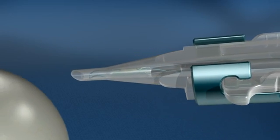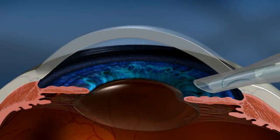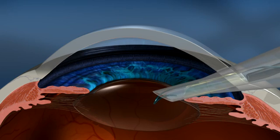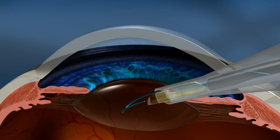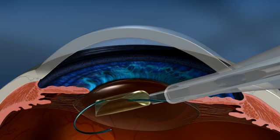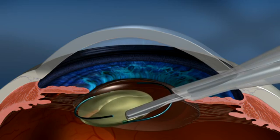For implantation of the Acrosoft multi-piece lens, the surgeon should then position the nozzle of the cartridge through the incision and into the eye. Once the nozzle is positioned within the eye, the surgeon will resume advancement of the multi-piece lens through the cartridge, ensuring that the leading and trailing haptics emerge from the nozzle tip of the cartridge in the desired orientation.